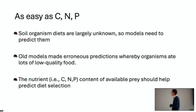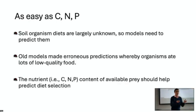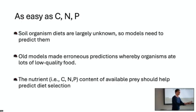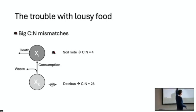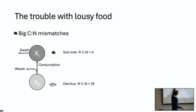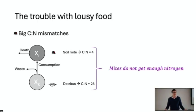It doesn't make sense that an organism would spend a lot of time and energy eating something that's not actually important nutritionally. The nitrogen content and phosphorus content of food should help us predict what these animals should eat. The problem is there are big mismatches in food quality: detritus — decomposing matter — has really low quality, lots of carbon, not very much nitrogen. Then a mite, a small soil organism that might eat this food, has a really high demand for nitrogen. So the model originally predicts that mites don't get enough nitrogen, which doesn't make sense.